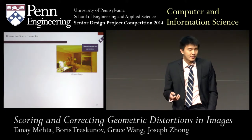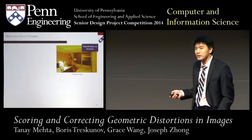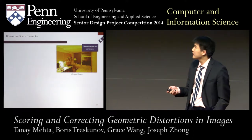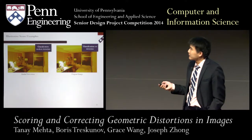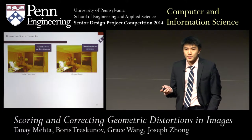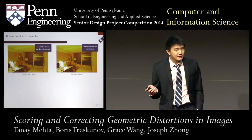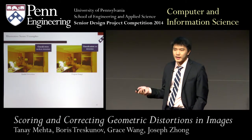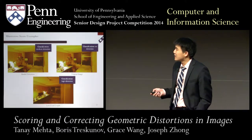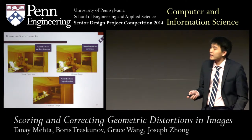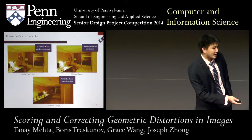We want to classify three images: the original, most representative image as having no distortion; images with subtle distortions — which may subconsciously appear slightly bigger — as having medium distortion; and the image taken with a low focal length lens as having high distortion. Boris will discuss the classification results.